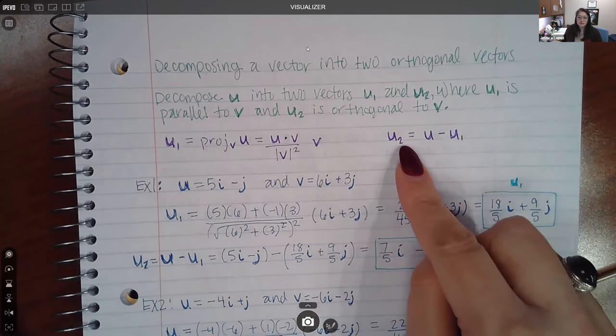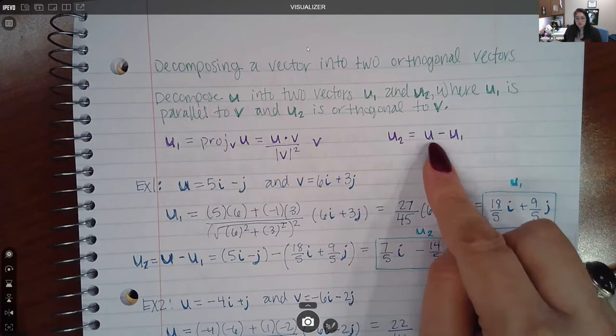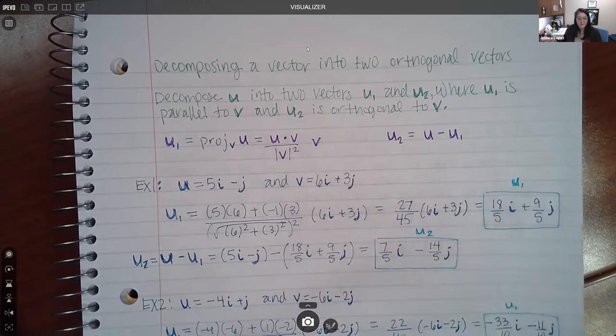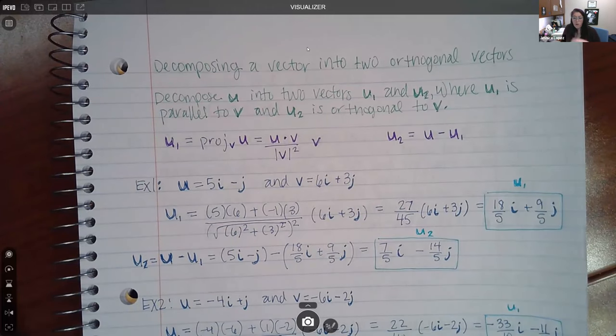And then if you want to find the second component, then what you're going to do is you're going to take the original U and subtract the vector you just found. And that will give you U2.